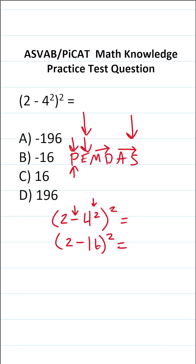We're still working inside parentheses. As you can see, we only have one operation left — notably 2 minus 16, which is going to be negative 14.